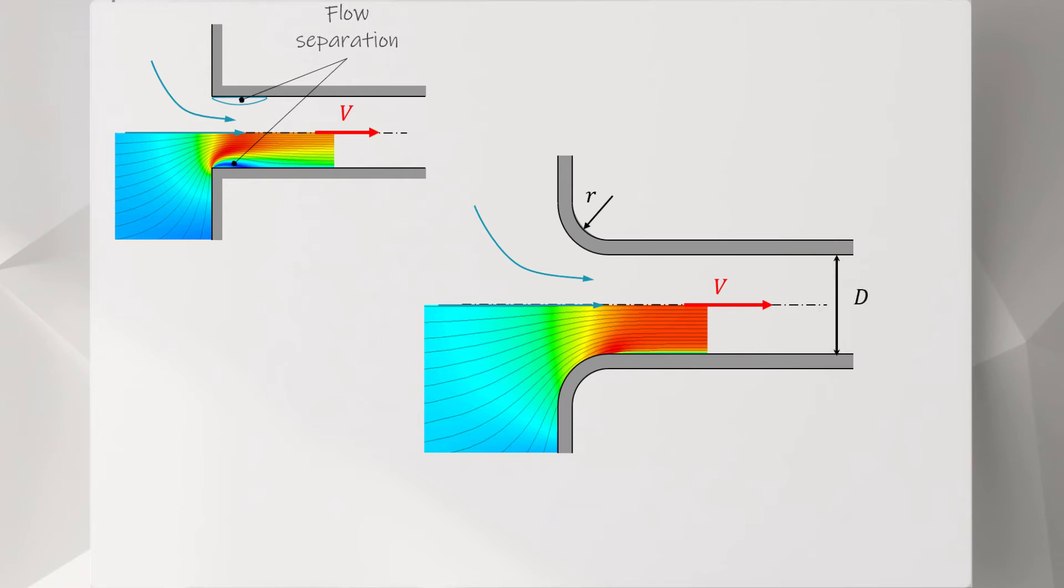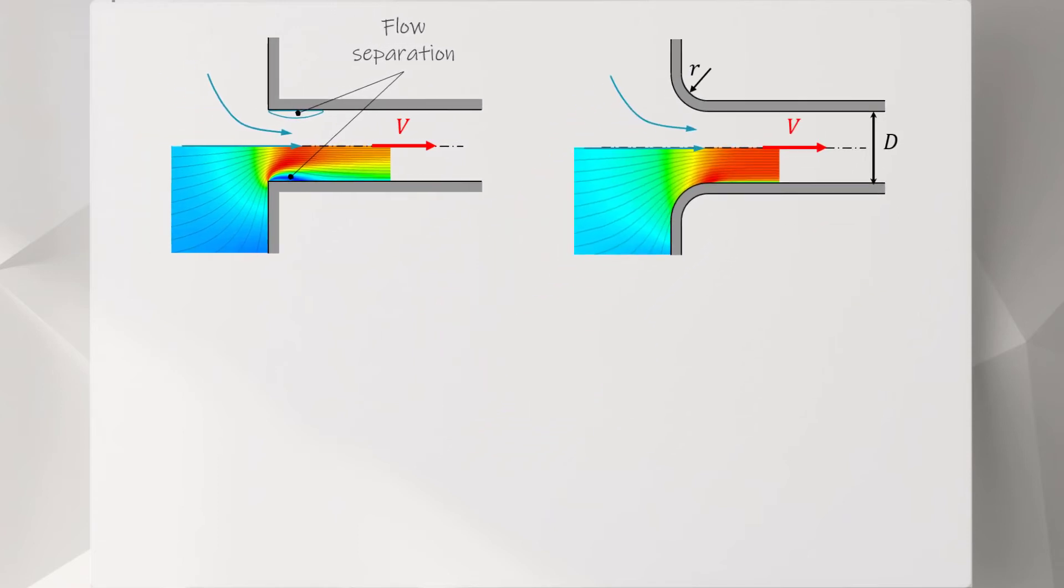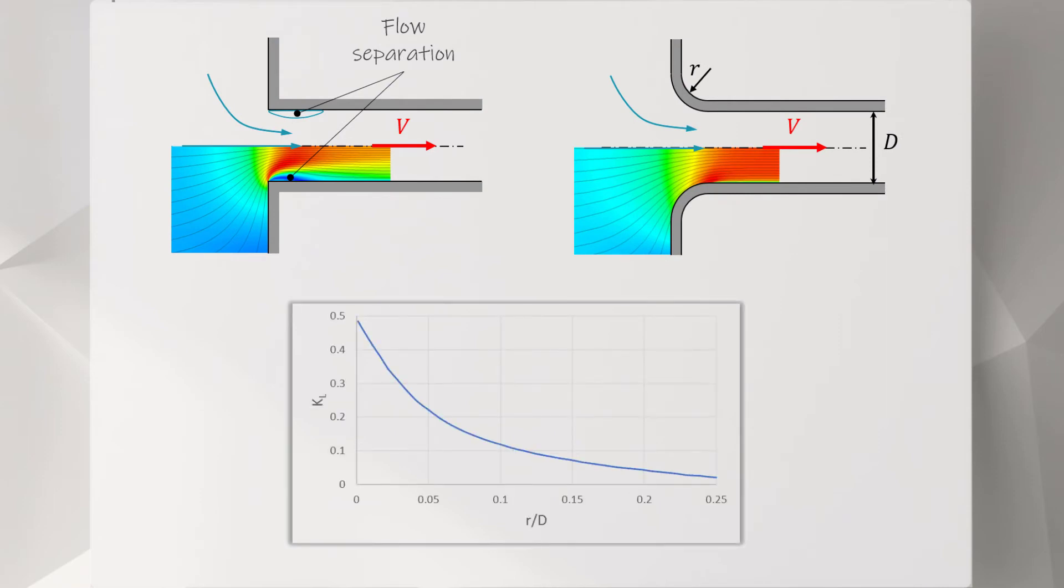The loss coefficient for entrance region can be related to the diameter of the pipe and the radius of curvature. The larger the radius of curvature, the lower the loss coefficient will be.